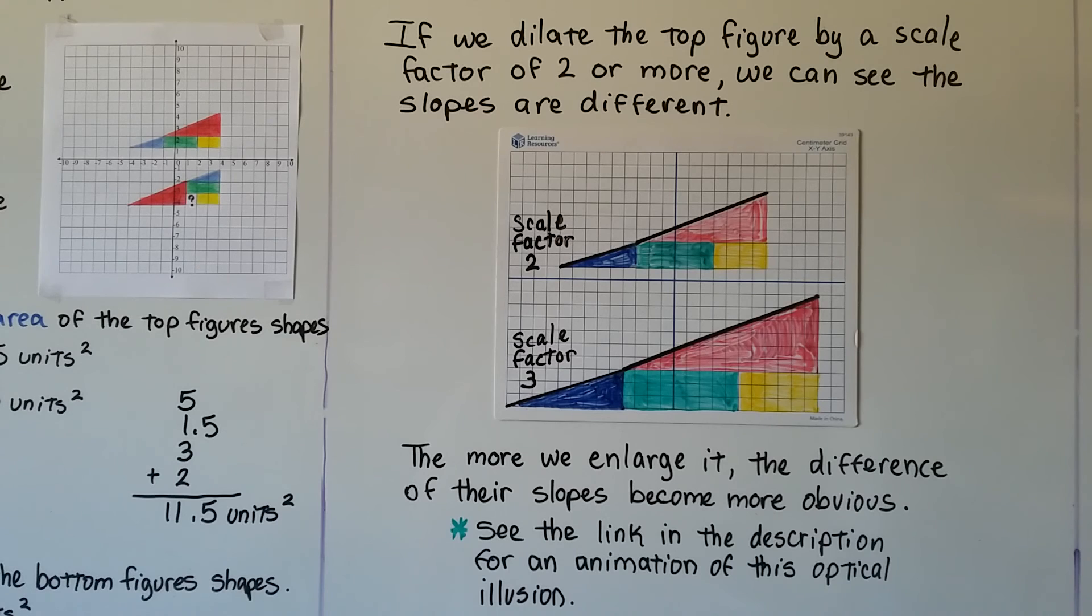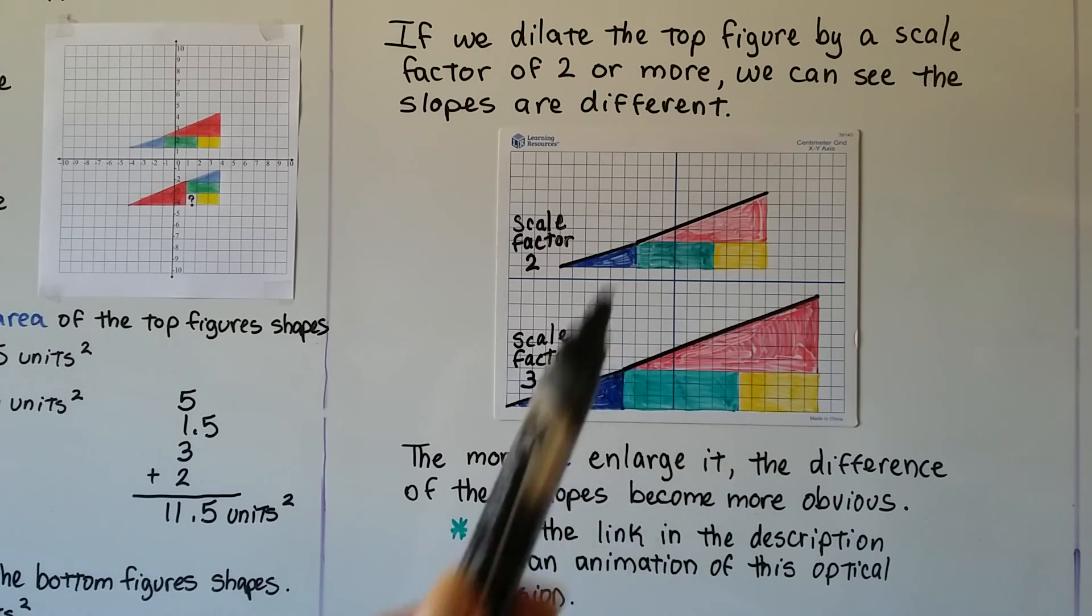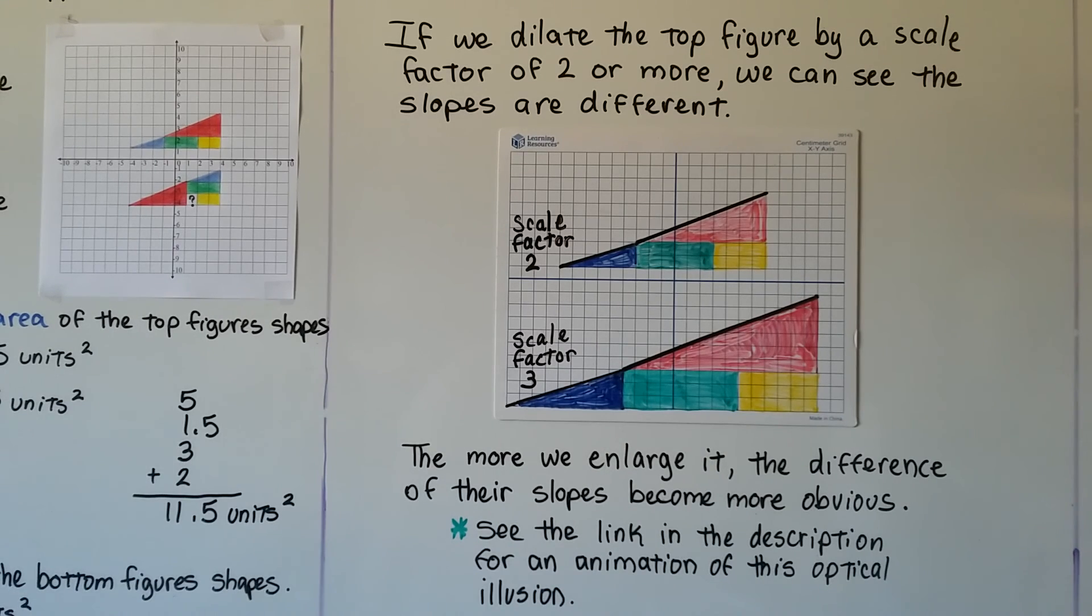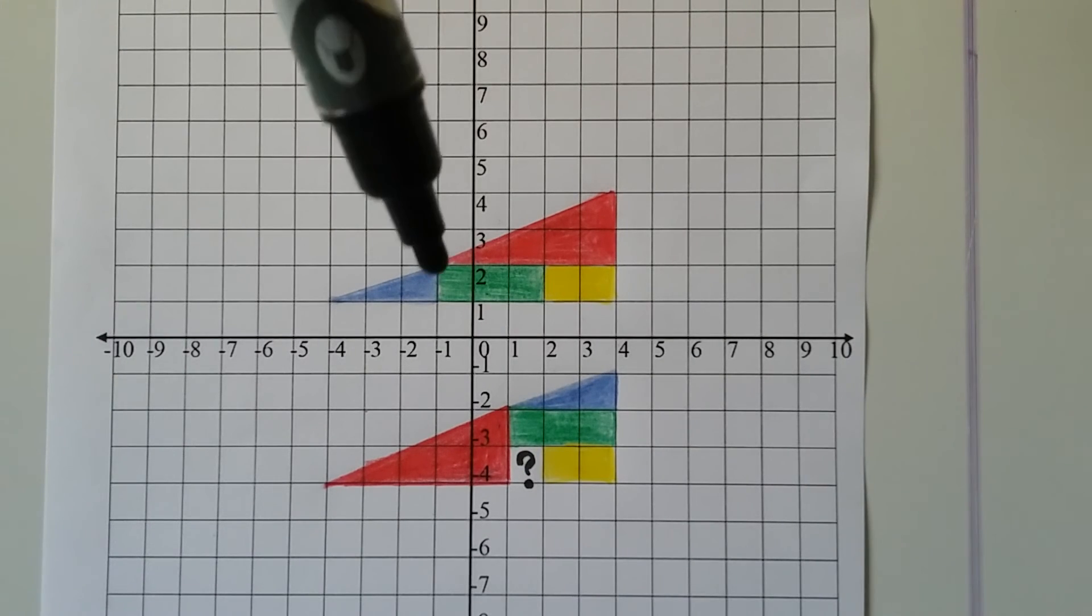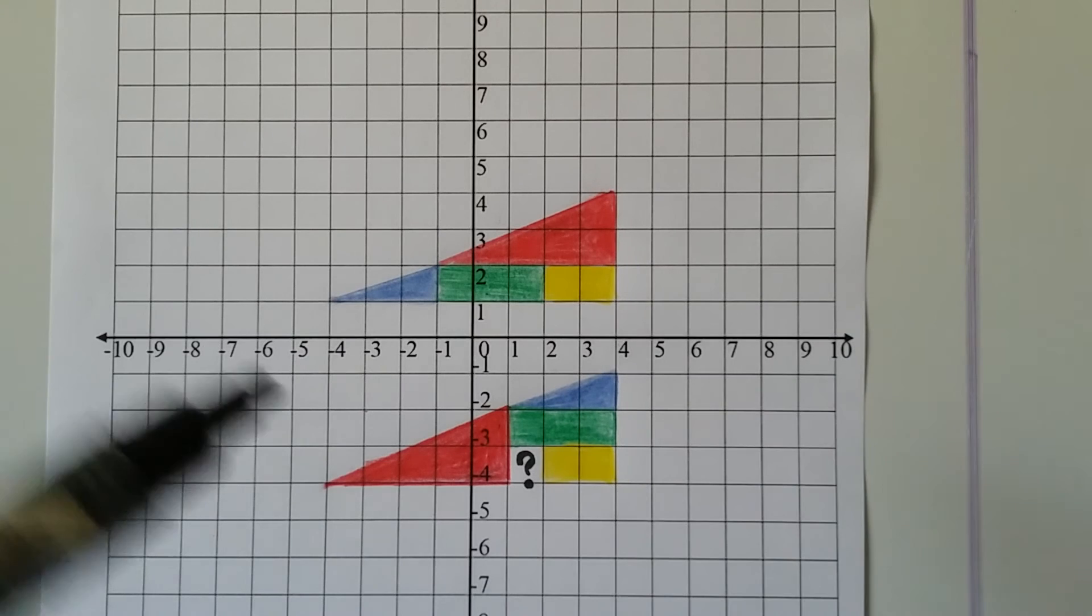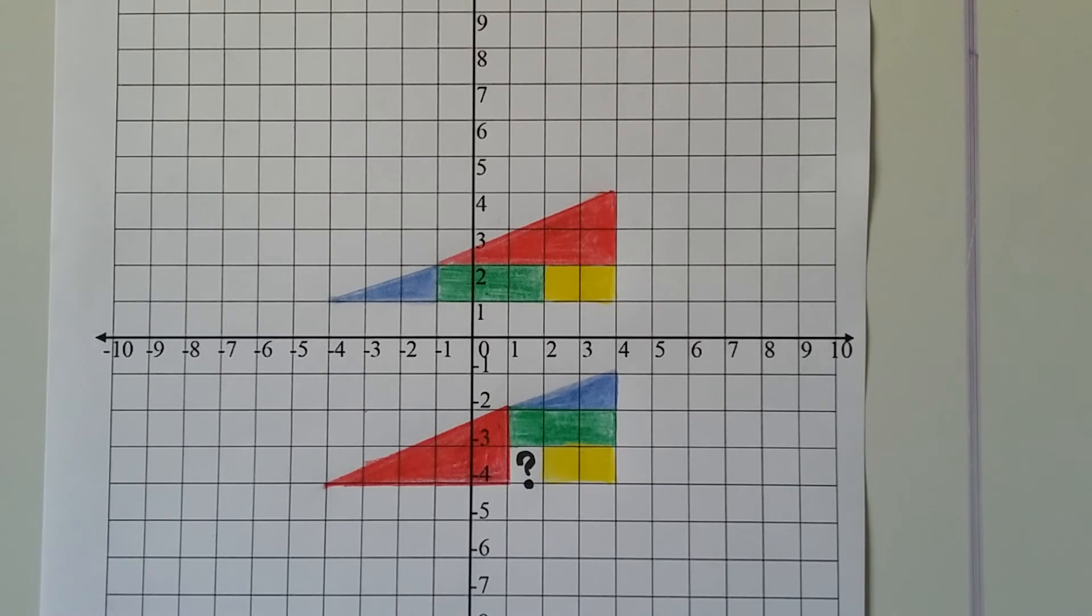I'm going to have a link in the description for an animation of these moving around. Check that out. It's a very quick link to a Wikipedia article with animation. Now that you know that their slopes are different, we can look at this and see it looks a little concave here, and this one looks a little convex here. So now you know the answer to the missing square puzzle. They have different slopes. It's not really a triangle.